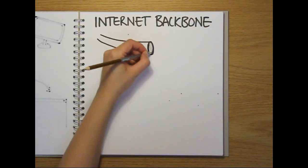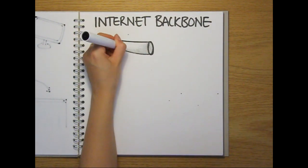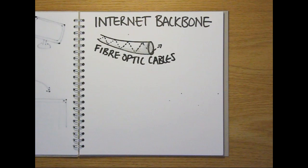Most of the internet backbone is made up of very fast, high-capacity fiber-optic cables that can transmit large amounts of data very rapidly.